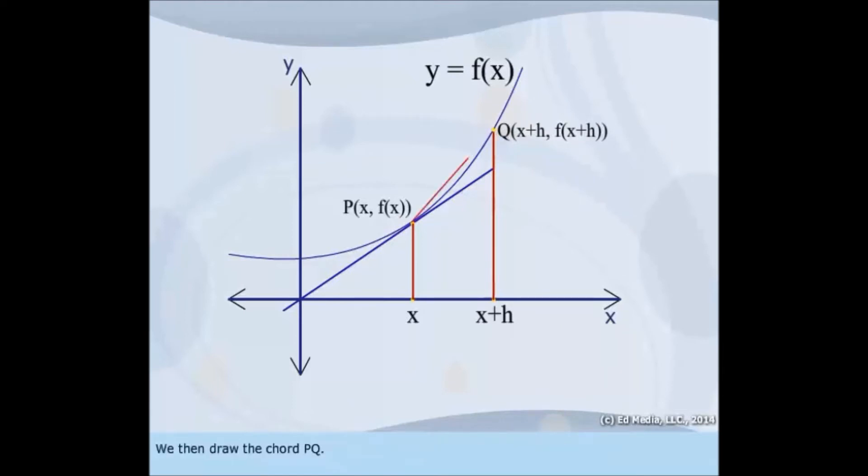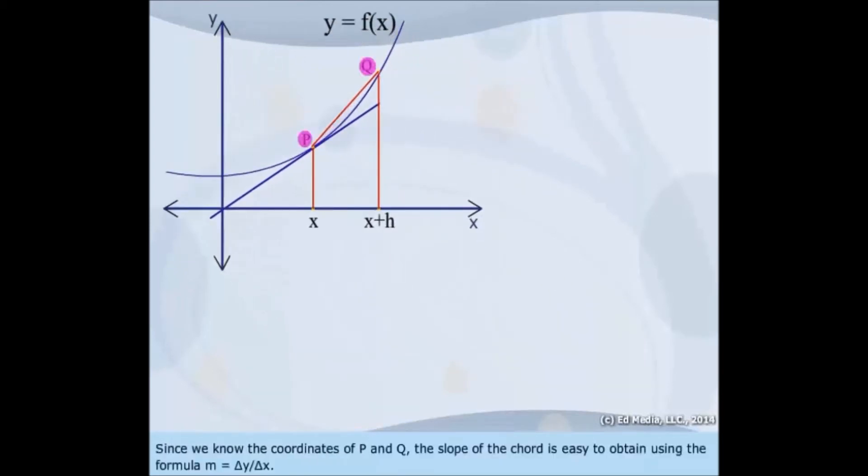We then draw the chord PQ. Since we know the coordinates of P and Q, the slope of the chord is easy to obtain using the formula m equals delta y over delta x.